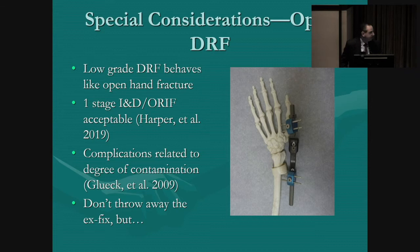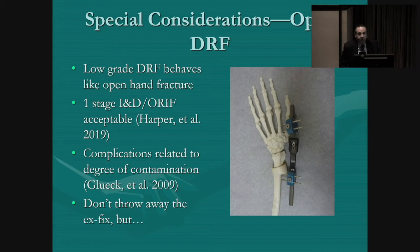Before I talk about ways to prevent the coffee cup from re-collapsing, I want to touch on a couple of special considerations. The first is the open distal radius fracture. It turns out these behave more like open fractures in the hand than like an open tibia fracture. Irrigation and debridement with ORIF is now largely considered acceptable, except in cases of severe comminution. Complications in open distal radius fractures seem more related to the amount of contamination, and not every open distal radius fracture needs ex-fixation with a second washout and late ORIF.